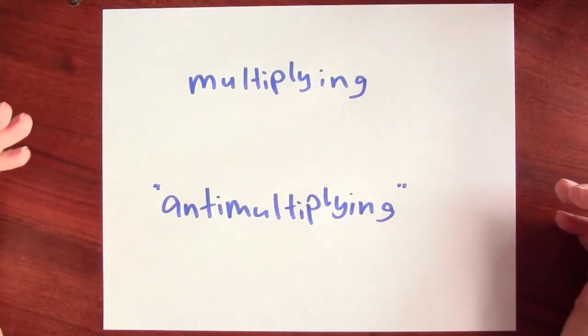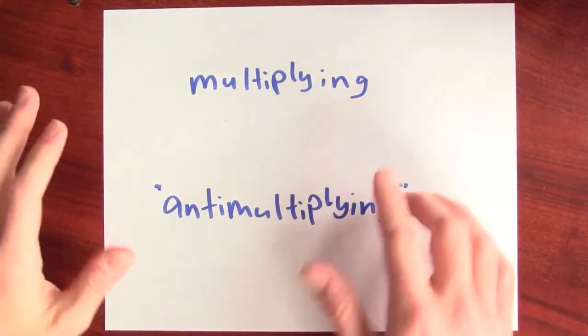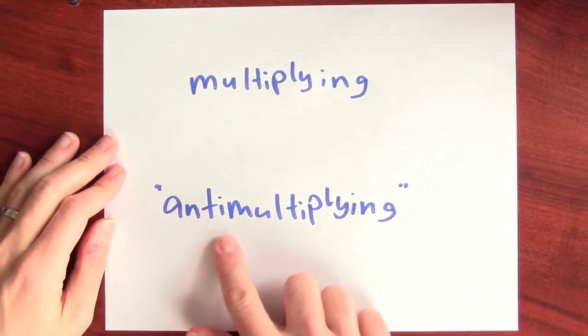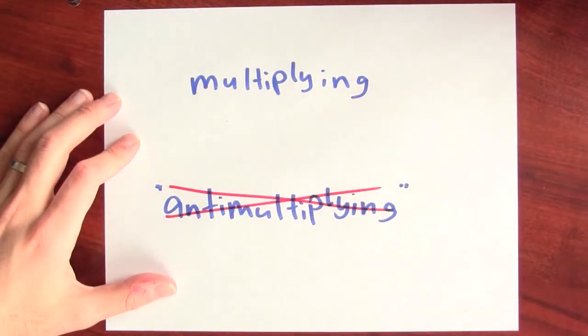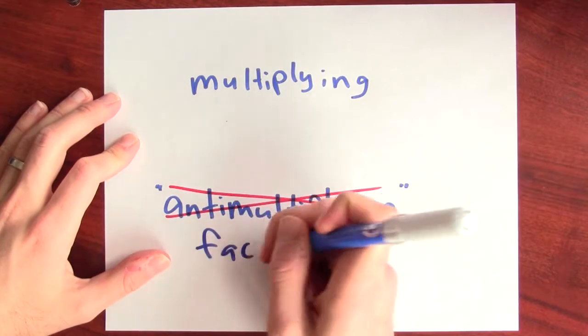Here is an ancient saying: It is easier to destroy than to create. There are mathematical instances of this too, like multiplying as compared to anti-multiplying. What is anti-multiplying? Okay, normal people wouldn't talk about anti-multiplying, right? They'd talk about factoring.